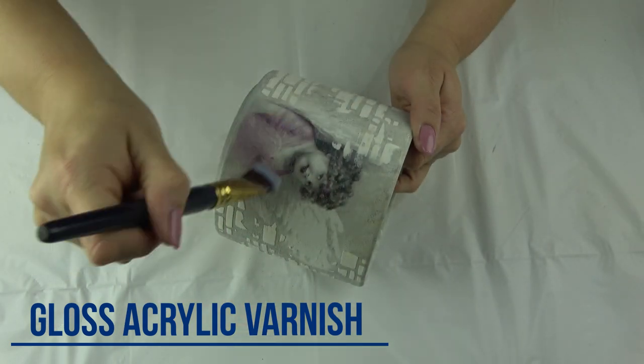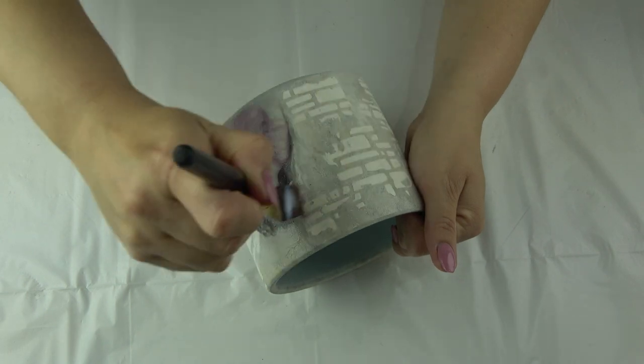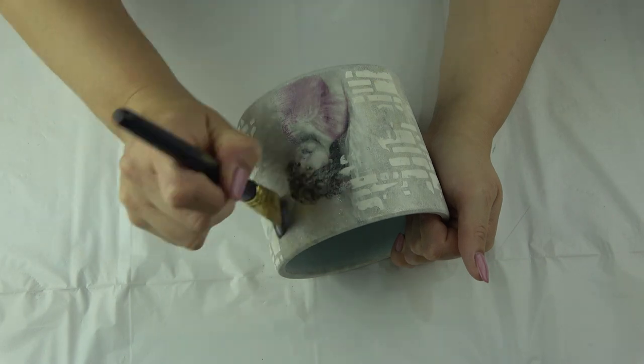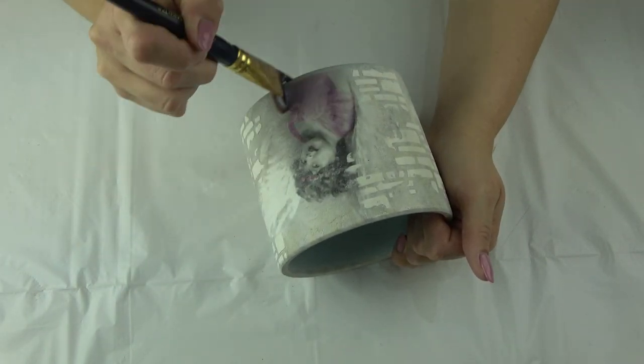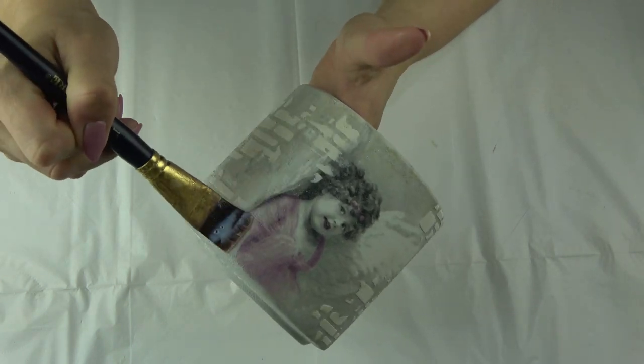When I'm happy with the finish, I can start varnishing. I apply several layers of gloss water-based varnish around my pot. This project doesn't need as many layers of varnish as usual, because structure paste covered all the imperfections.